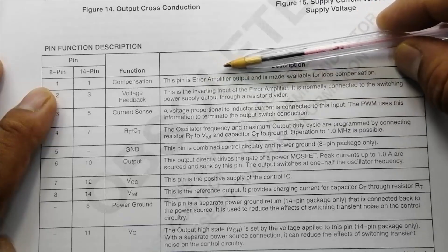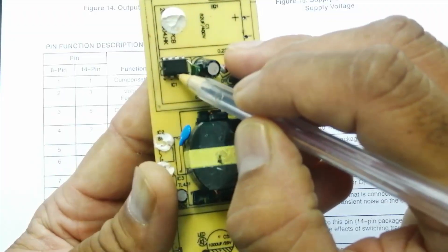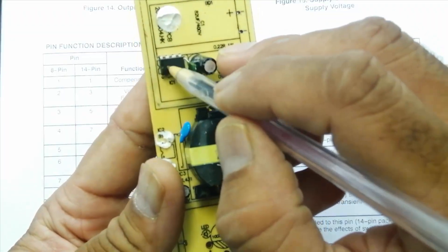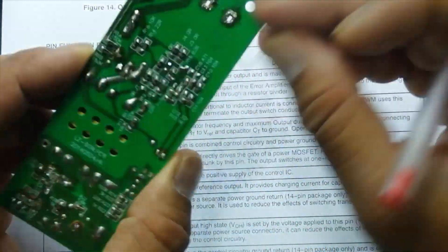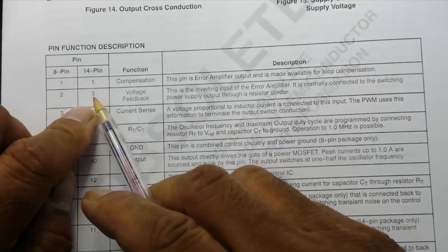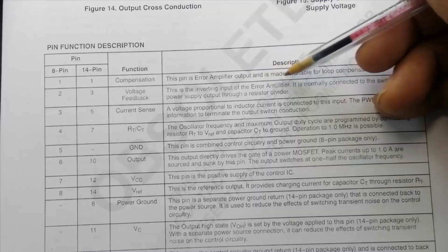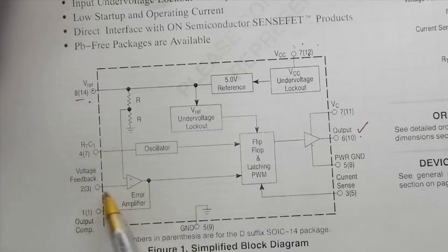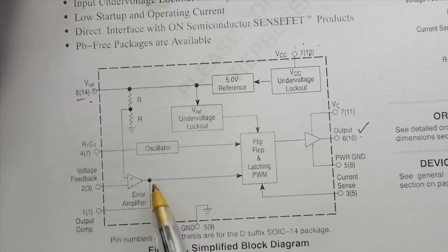It is input of error amplifier. I have this 3842 series IC. 3842 and 43 are same. I have this IC, we will see this design how it is working. Compensation pin number 3, feedback, voltage feedback. This is inverting input of the error amplifier. Here is voltage feedback, compensation is here output, compensation is here.